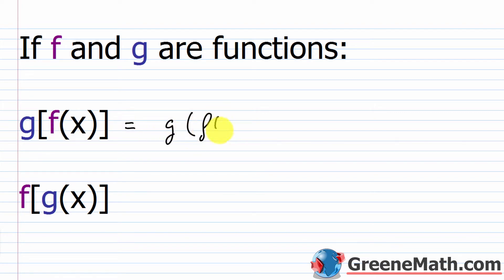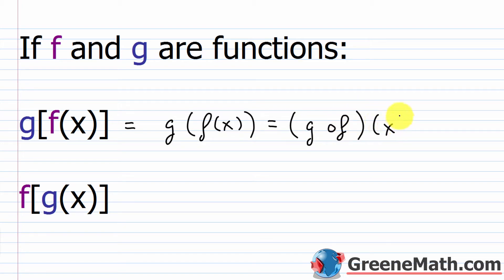You could say g of f of x, and then another way to write it — a way you've probably never seen before — you'll have g composed with f using a circle notation. This way right here is the one that confuses most students. It's a foreign notation. People always look at that and think it's a multiplication symbol. It's not — you can see that it's not filled in. This is not g multiplied by f in any way, shape, or form. This is g composed with f.